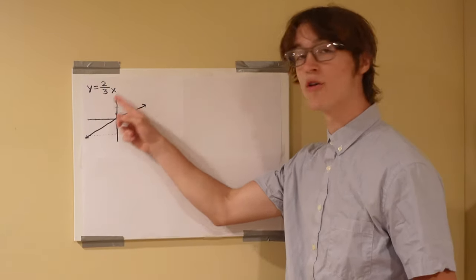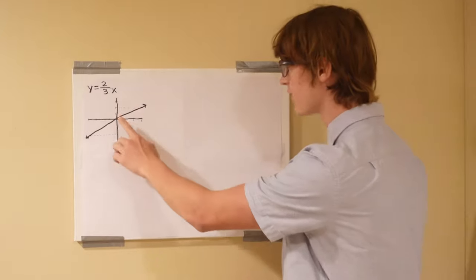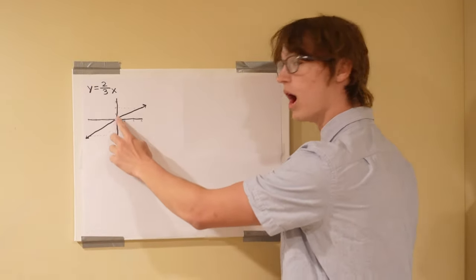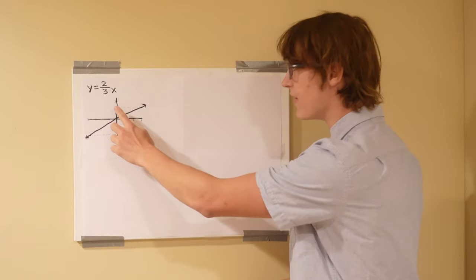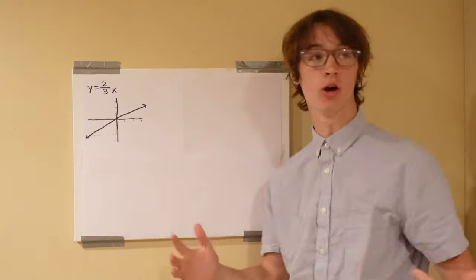Okay, everyone. So for our equation, we have y equals 2 over 3x, which means for our graph, we have to go up 2 and then over 3, which gives us our slope.